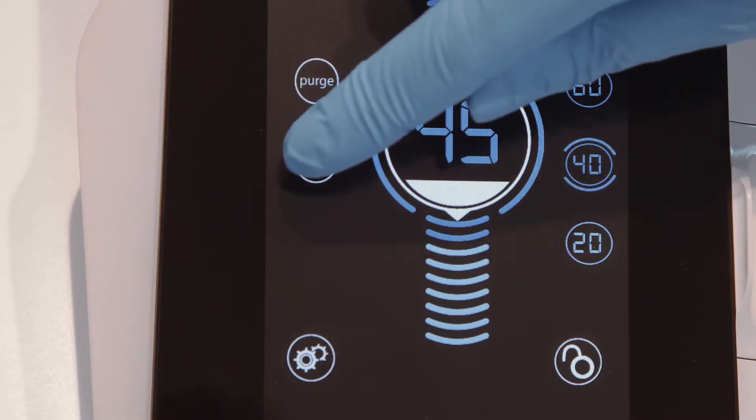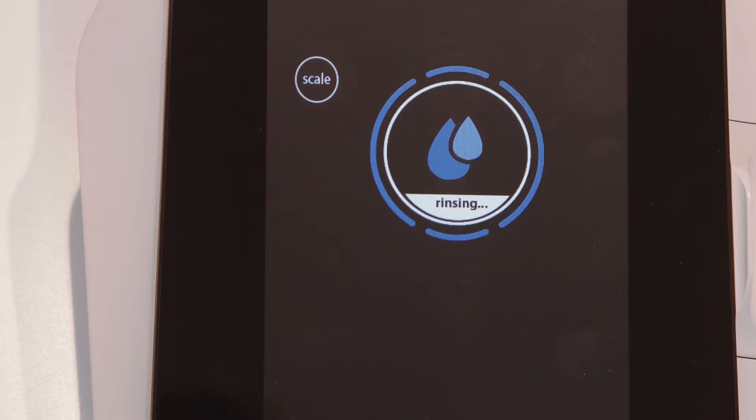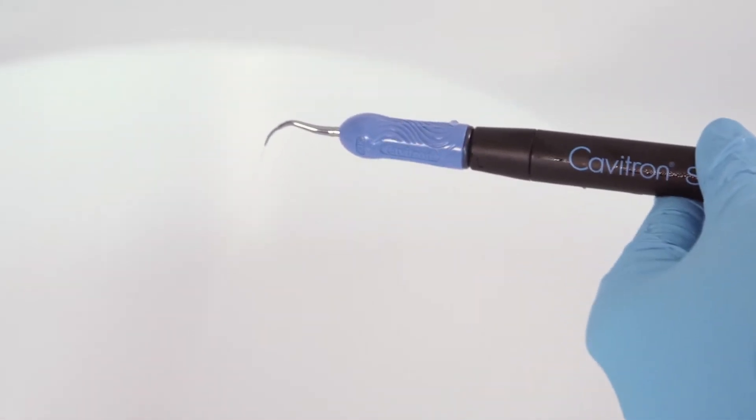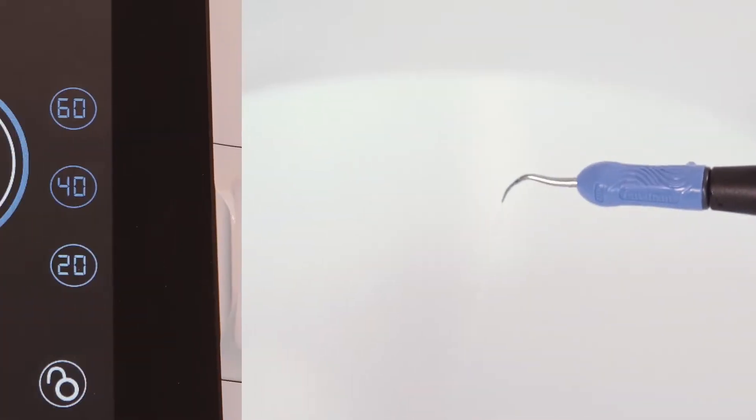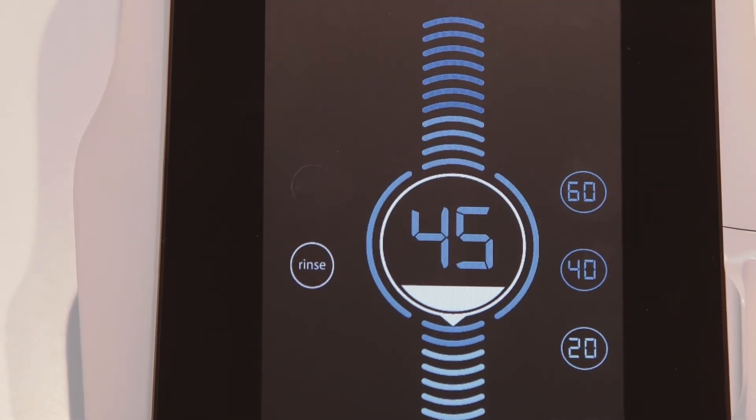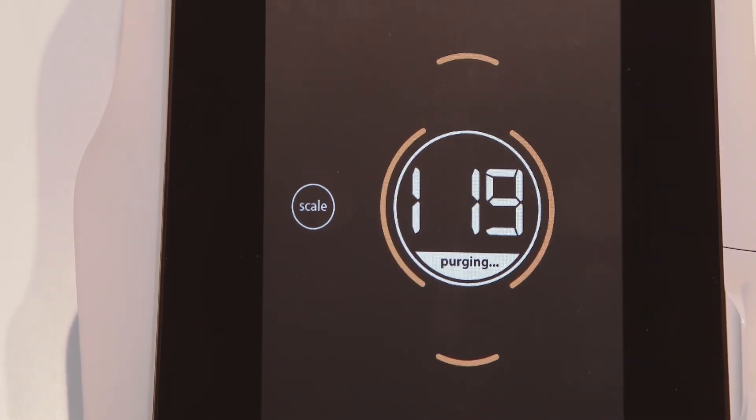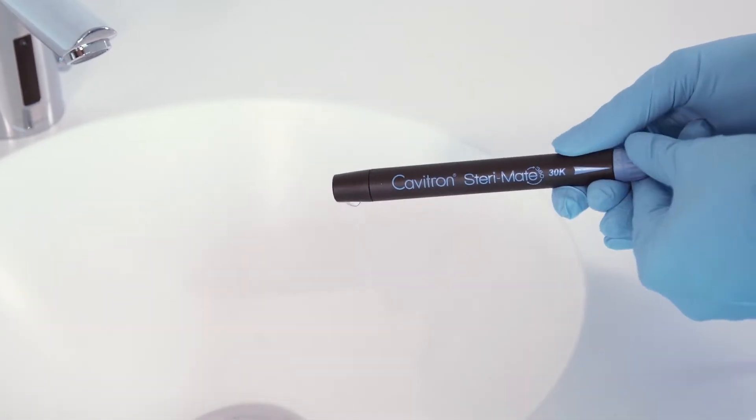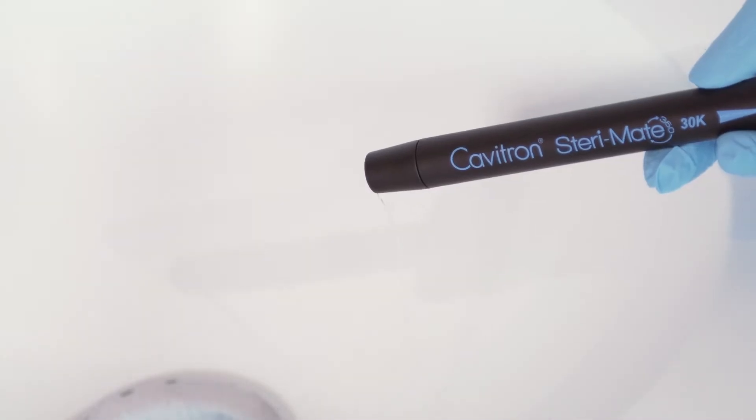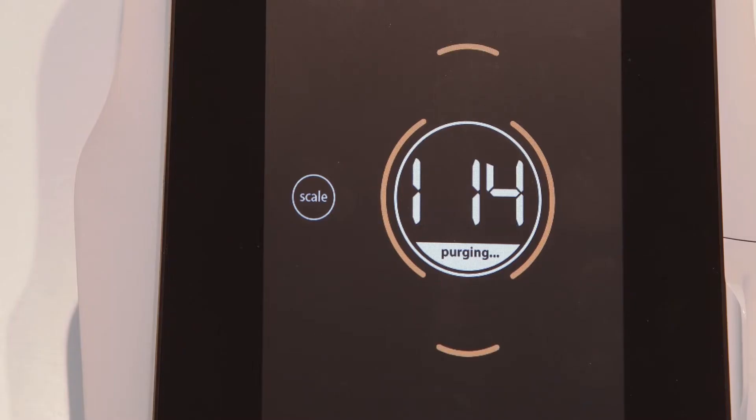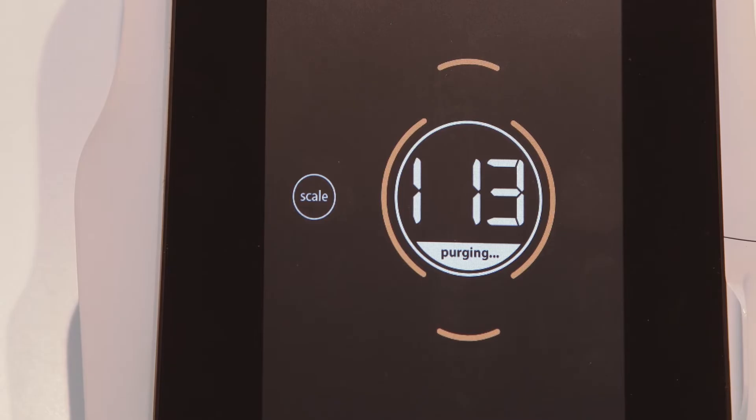The rinse icon is tapped to allow use of the handpiece for lavage only, without cavitation of the insert tip. The purge icon is tapped to access the feature which activates continuous water flow through the handpiece without an insert, for 120 seconds which is the suggested time to purge the water lines at the beginning of the day.